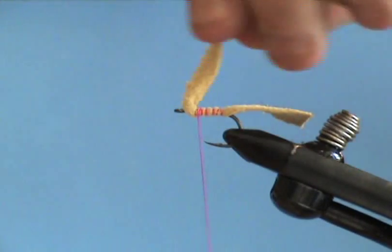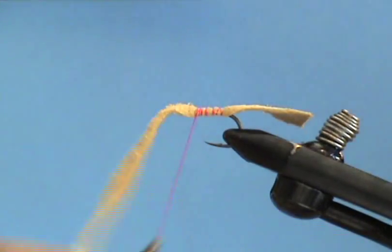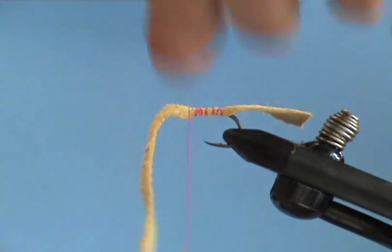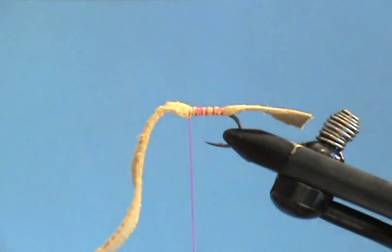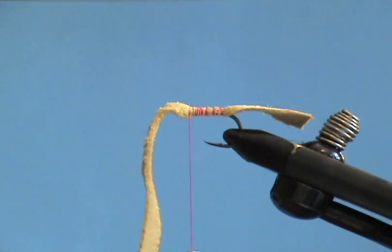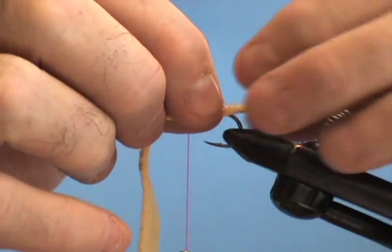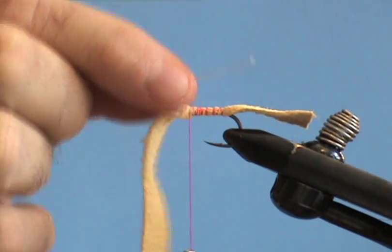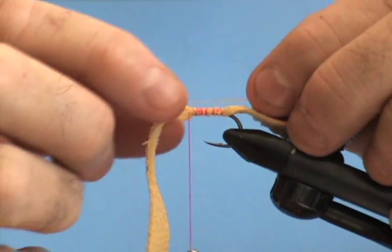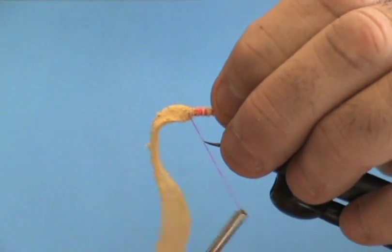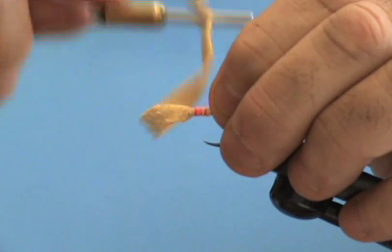I'm going to wind back up to the eye, and once I get up to the eye, I'm going to put my piece of mono in, and that's going to act as my splint to help keep this chamois that's super flexible from falling around.